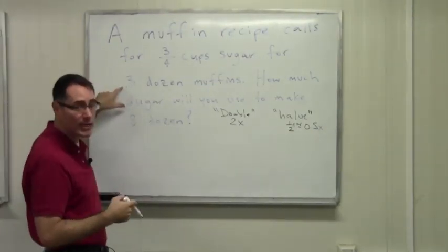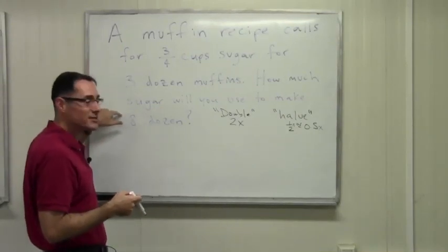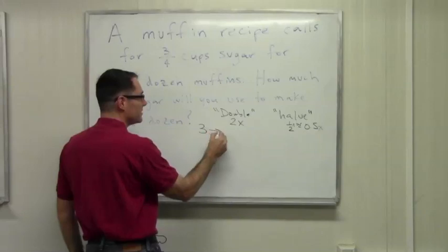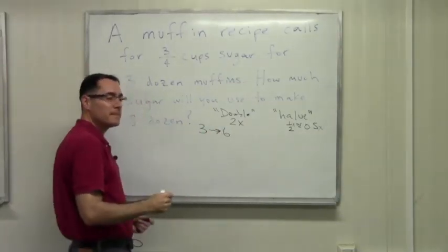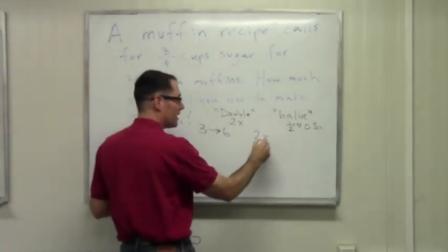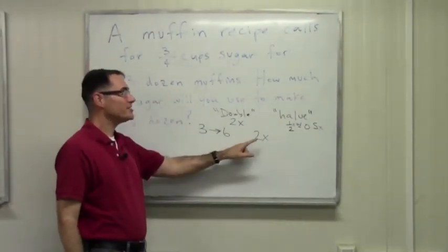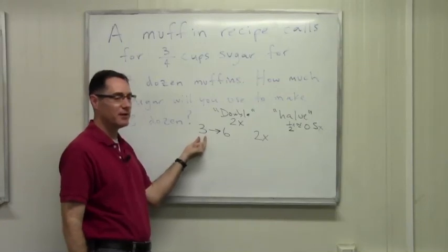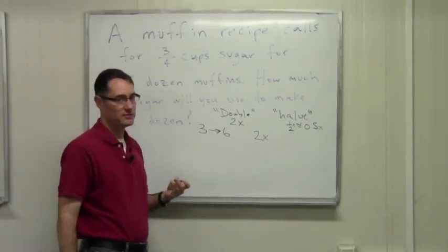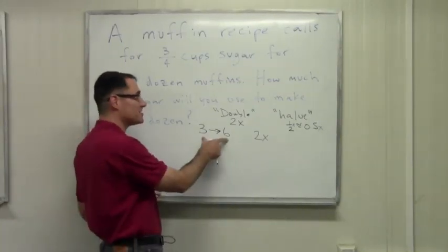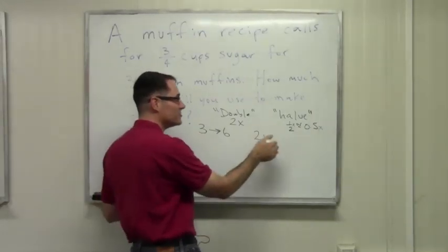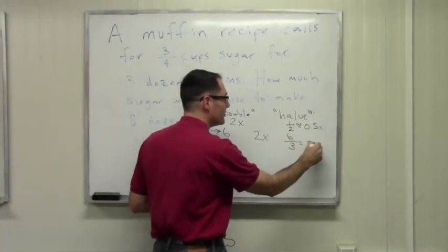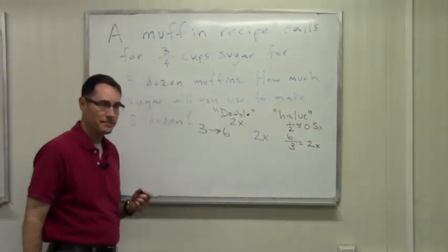These numbers — double and halve — come from a mathematical idea. Let's say you're going to double the recipe, going from 3 dozen muffins to 6 dozen. We already know you multiply by 2. But where does that 2 come from? It comes from 6 divided by 3, which gives you 2. So 6 divided by 3 tells you you're going to multiply by 2 times.